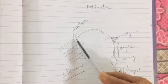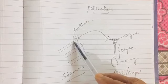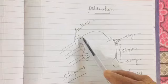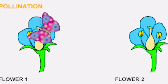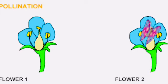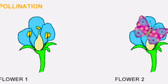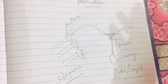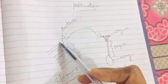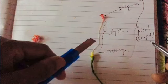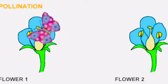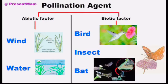On maturation of the anther, these yellow-colored pollen grains are released. So pollination is the transfer of pollen grains from the anther to the stigma — that is, from the stamen to the pistil — or in other words, the transfer of pollen grains from the male reproductive organ to the female reproductive organ is known as pollination.